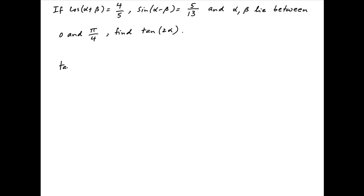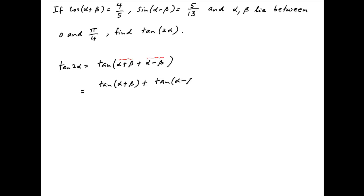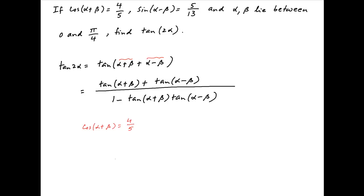We are required to find the value of tan(2α), which can be expressed as tan((α+β)+(α-β)). This is equal to tan(α+β) plus tan(α-β) divided by 1 minus tan(α+β) times tan(α-β).